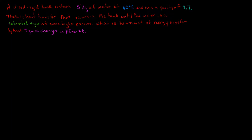In this video we have a closed rigid tank that contains 5 kilograms of water at 60 degrees Celsius with a quality of 0.7. There is heat transfer that occurs in the tank until the water is a saturated vapor at some higher pressure. We're asked to find the amount of energy transferred by heat. We're told to ignore changes in potential energy and kinetic energy.